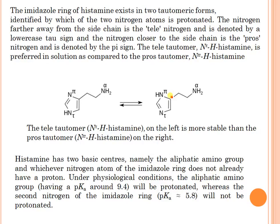Histamine shows a dynamic structure, forming two tautomeric forms. The imidazole ring of histamine exists in two tautomeric forms, identified by which of the two nitrogen atoms is protonated. The nitrogen further away from the side chain is called the tau nitrogen and is denoted by the lowercase tau sign.